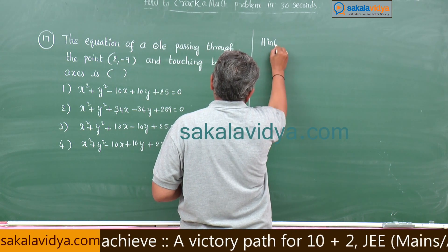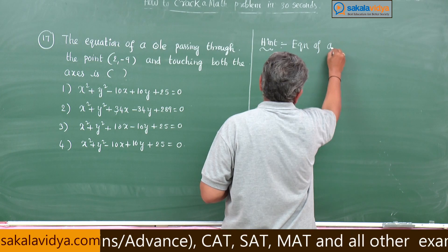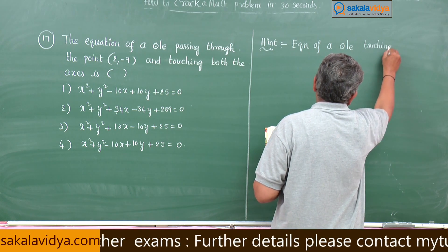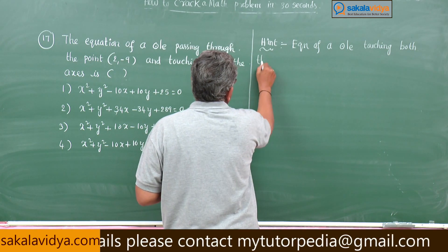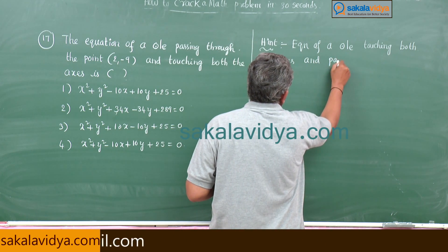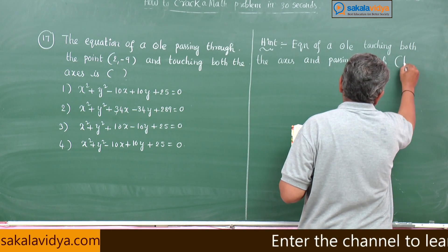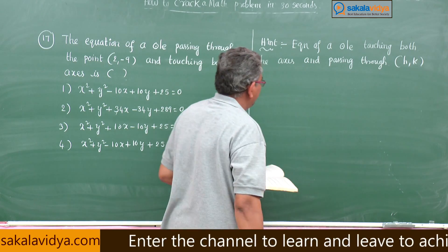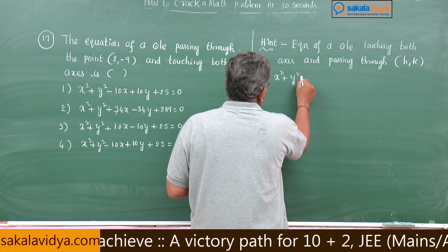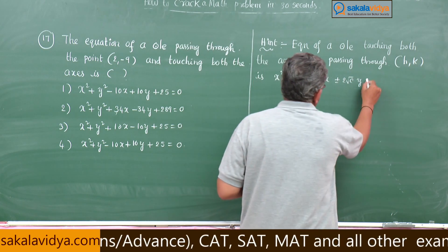Hint: The equation of a circle touching both the axes and passing through (h, k) is x² + y² ± 2√c · x ± 2√c · y + c = 0.